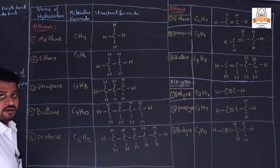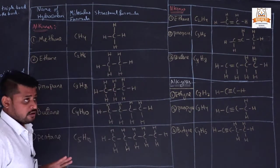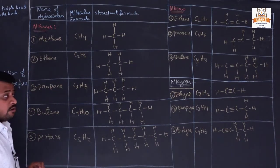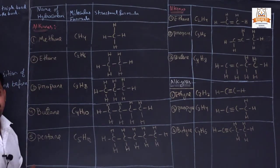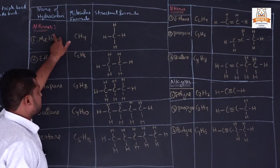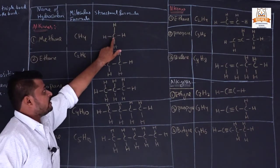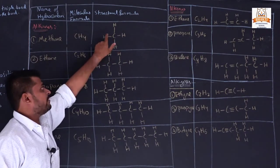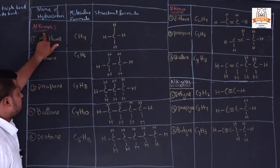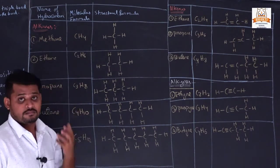First we will study about alkanes. A structure in which only single bonds are present is called an alkane. See here: carbon has bonding with four hydrogen atoms with a single bond, so it is called an alkane. The molecular name of CH4 is methane.